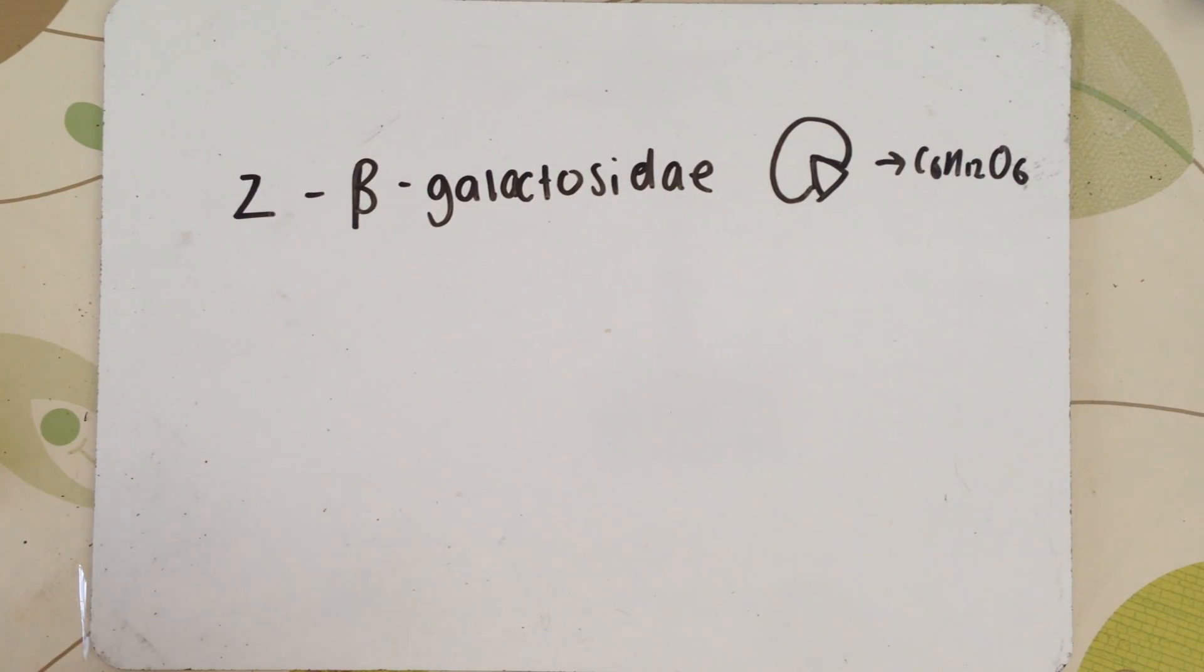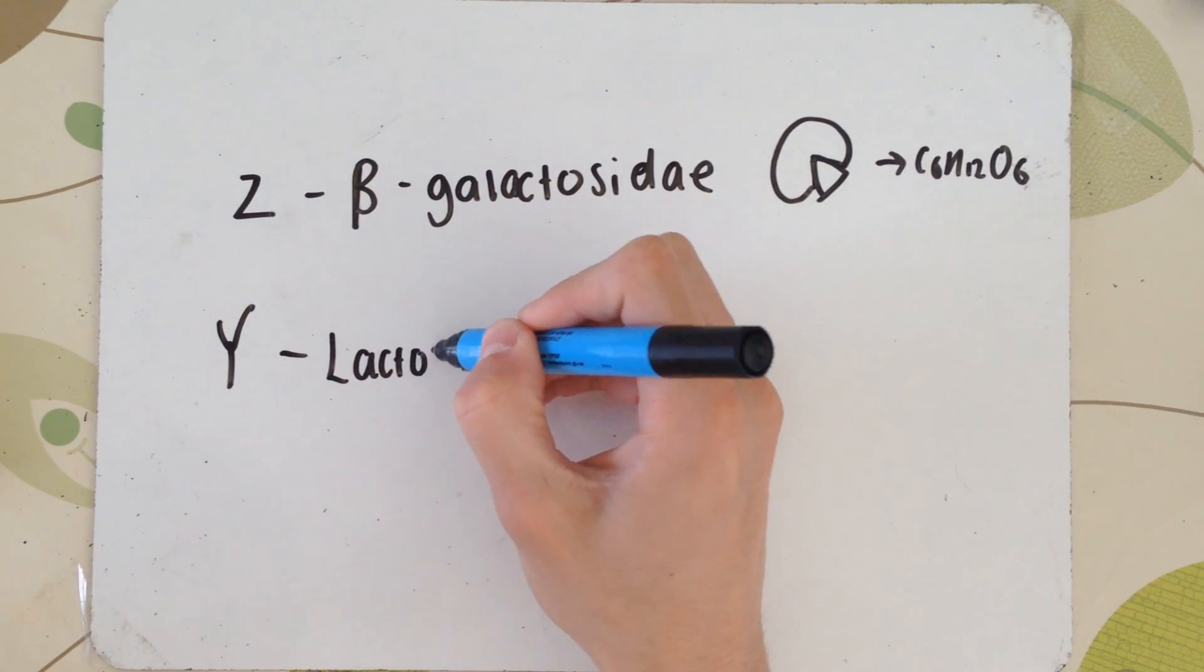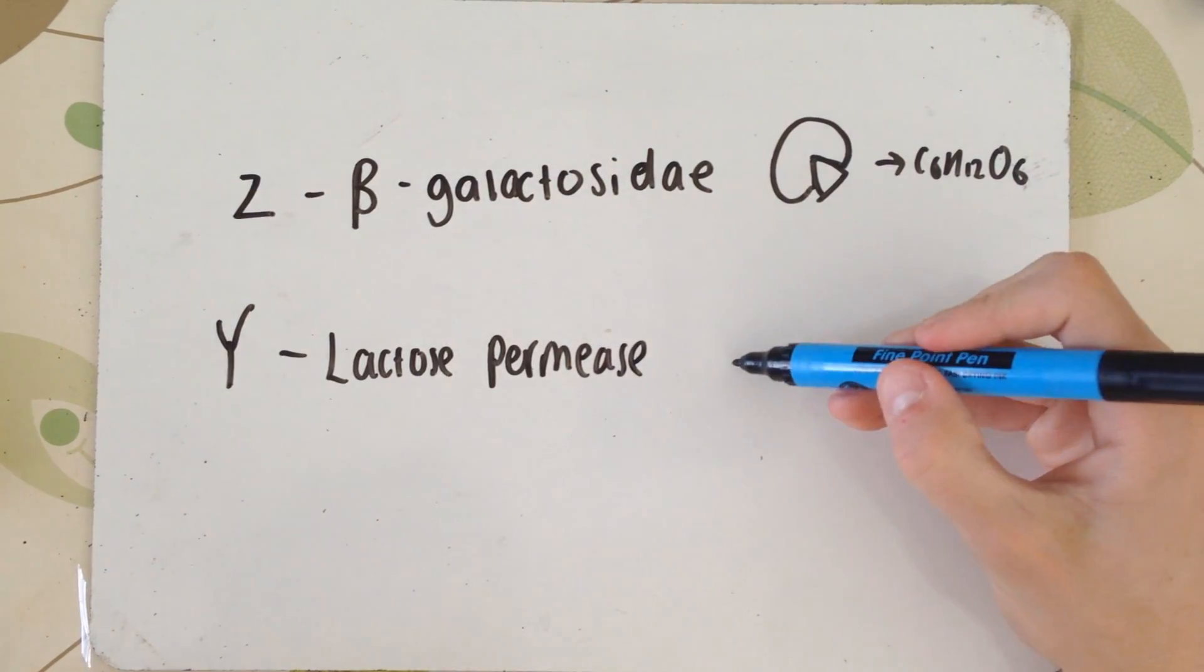The next one is lactose permease, which is a type of channel protein that essentially just sits in the cell surface membrane and allows the quick entry of a lot more lactose.